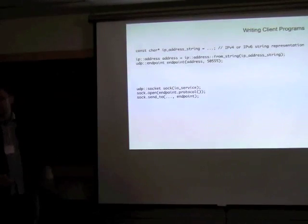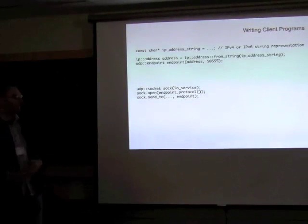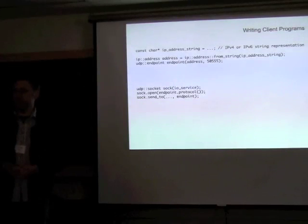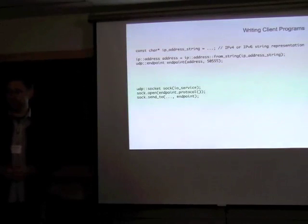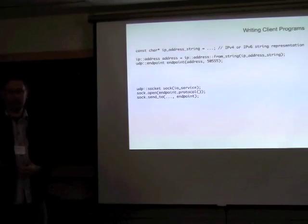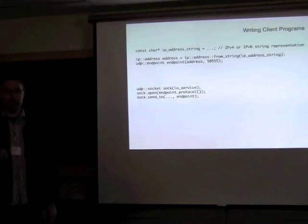Alternatively, you could just go back to using the address class and use from_string to convert directly from the string representation, which will not do any host name resolution at all. What's appropriate really depends on the protocol you're implementing. In my experience, most UDP involves configuration files with specific IP addresses being specified.